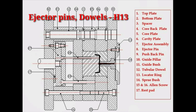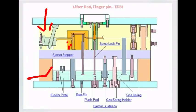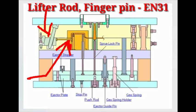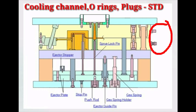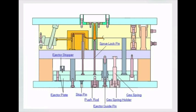Ejector pins, return pin and dowel, made from EH13, that is hardened steel. Lifter rod and finger pin, it is made from EN31. And cooling Allen bolts, cooling channel, Allen bolts, plugs, circular clips and o-rings, all these are the standard materials we are taking from the market directly to reduce the cost. Because when we purchase any standard part from the market, it will reduce the cost.